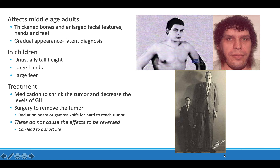In adults, symptoms include very thick bones, enlarged facial features, and large hands or feet — and this is a gradual process over time. In children, they are going to be unusually tall for their age group and may also show large hands or large feet. Treatment options include shrinking the tumor so growth hormone levels decrease, or removing the tumor entirely. When the tumor is hard to reach, more precise treatments like radiation beam or gamma knife can be used.